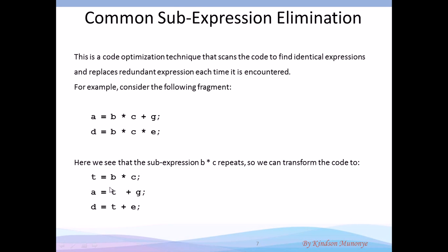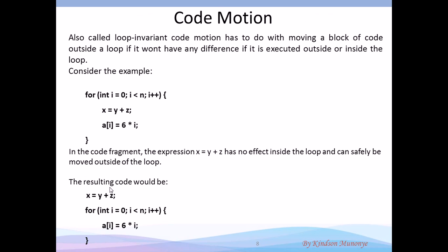Code motion simply means an expression that is inside a loop and doesn't change inside the loop can simply be moved outside the loop. If a loop is executing without changing certain variables inside it, move that expression out. So if we look at the example, we have x equal to y plus z. This expression need not be inside the loop, so code motion moves the expression outside. The optimized code is shown below.